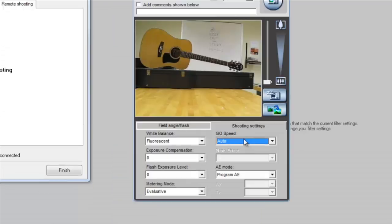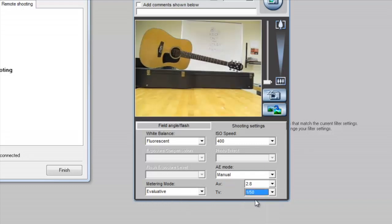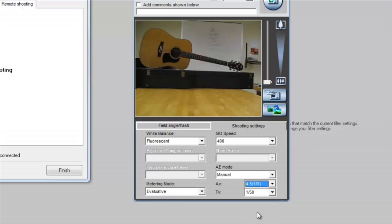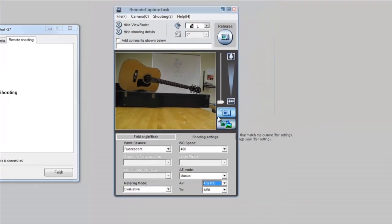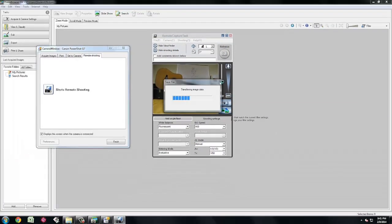Set the ISO to 400, AE mode to manual, exposure time which is referred to as TV in Zoom Browser to 1 by 50, and aperture that is AV to 4.5. Then press release to grab a picture.